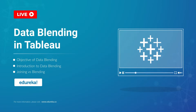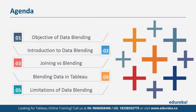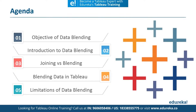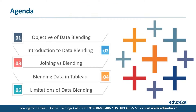Before we begin, let's discuss our agenda for today. First, we're going to talk about the objective of data blending. Then we're going to talk about what data blending essentially is and how it works in Tableau. Then we're going to discuss a concept called joining and see how it is different from data blending. Then we're going to see a very short demo, a few simple steps. And finally, we're going to discuss a few limitations in this process. So without much ado, let's get straight to the module.